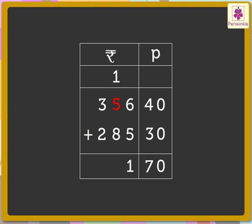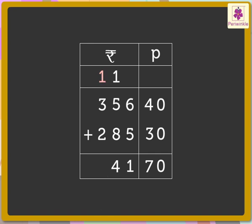1 plus 5 plus 8 is equal to 14. Carry 1 above the number 3. Write 4 in the answer, that is, in the tens place. Lastly, 1 plus 3 plus 2 is equal to 6. So the total is 641 rupees and 70 paise.